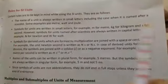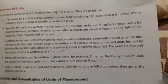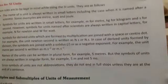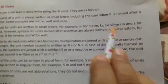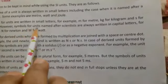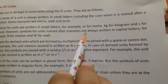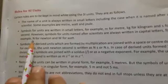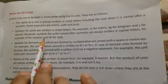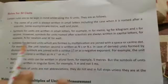Second point is symbols for units are written in small letters. For example, small m for meter, kg for kilogram, and s for second. However, symbols for units named after scientists are always written in capital letters. For example, N for Newton and capital W for watt.